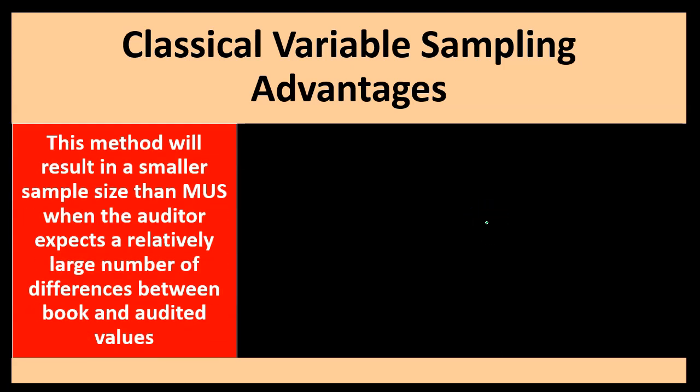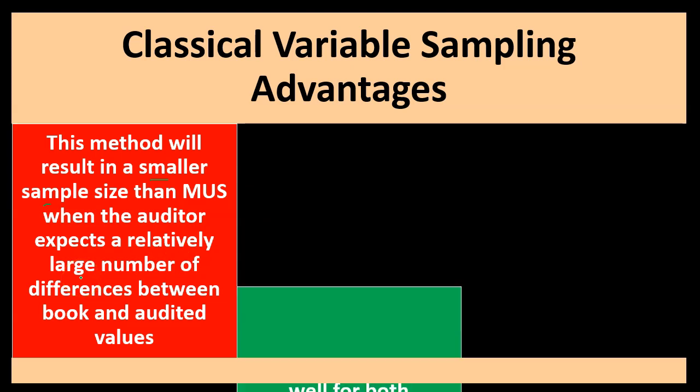This method will result in a smaller sample size than monetary unit sampling when the auditor expects a relatively large number of differences between book and audited values. Our goal is typically to have a smaller sample size because that means less work and less actual testing for us.